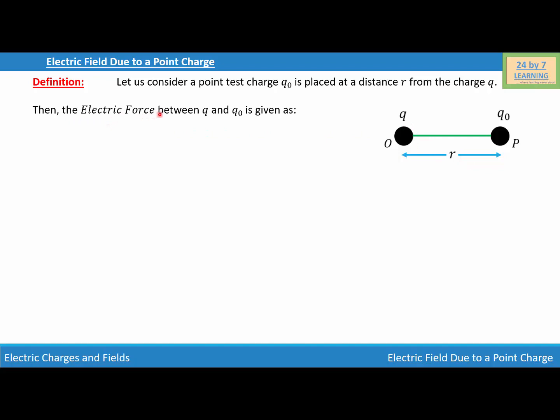The electric force between charge Q and Q₀ is given by Coulomb's law. We write F = 1/(4πε₀) × QQ₀/R². This is the electric force experienced by charge Q₀ due to charge Q.